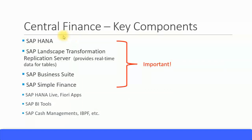Let's look at the key components for Central Finance installation. You need SAP HANA database to run all SAP Simple Finance and Central Finance suites. You also need the SAP Business Suite and SAP Simple Finance. The important additional installation you need is the SAP Landscape Transformation Replication Server. The keyword is 'replication' — what happens in Central Finance is that from external systems you post to the SAP Central Finance system, and this replication server provides real-time data for tables, allowing you to get information from the ACDOCA table.